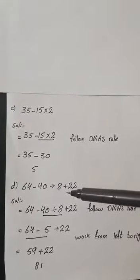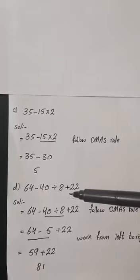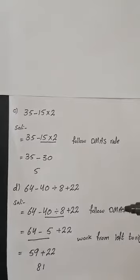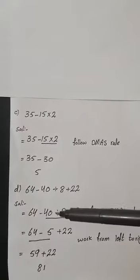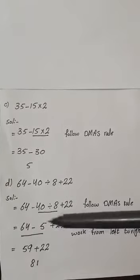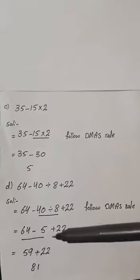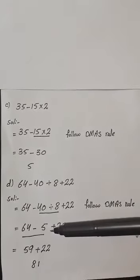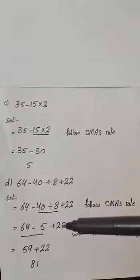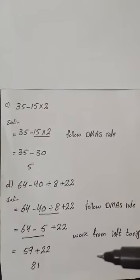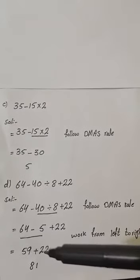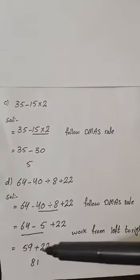In this question, we have three operations — minus, divide, and plus — belonging to two different families, so we follow the DMAS rule. First, do the division: 40 divided by 8 equals 5. Put the remaining values as they are: 64 minus 5 plus 22. Now these two operations belong to one family, so work from left to right: 64 minus 5 equals 59, then 59 plus 22 equals 81.